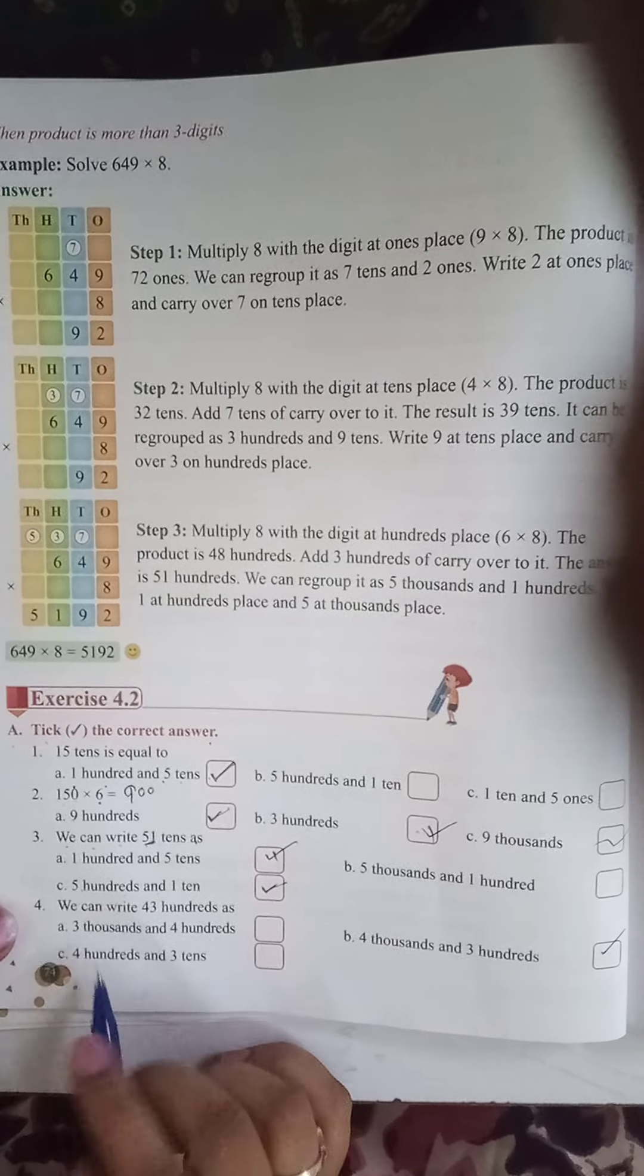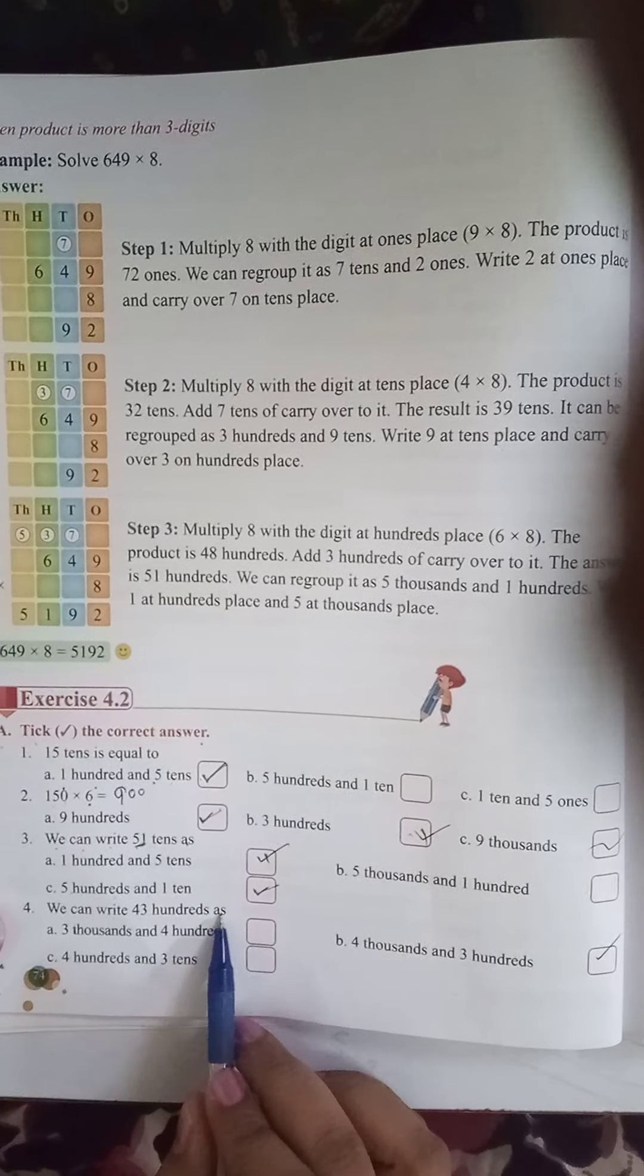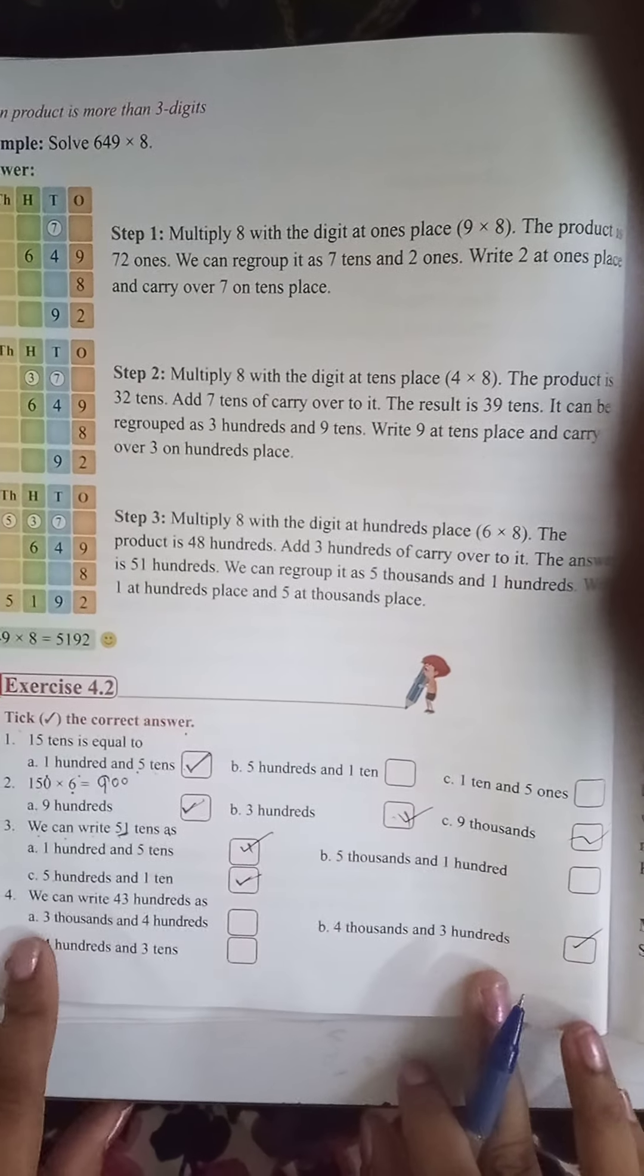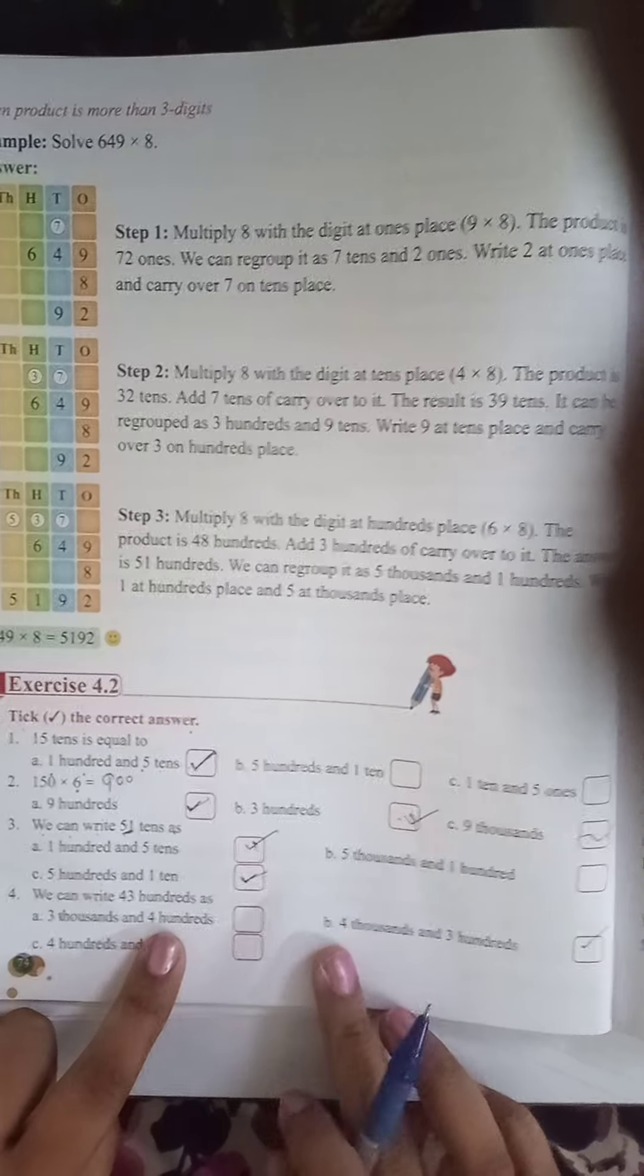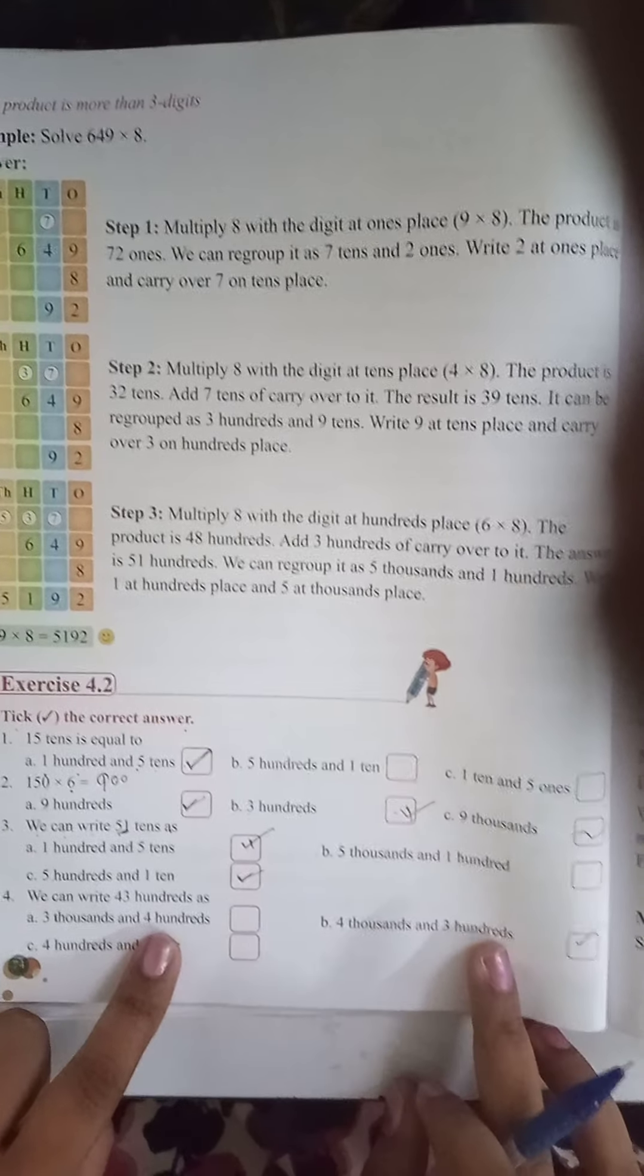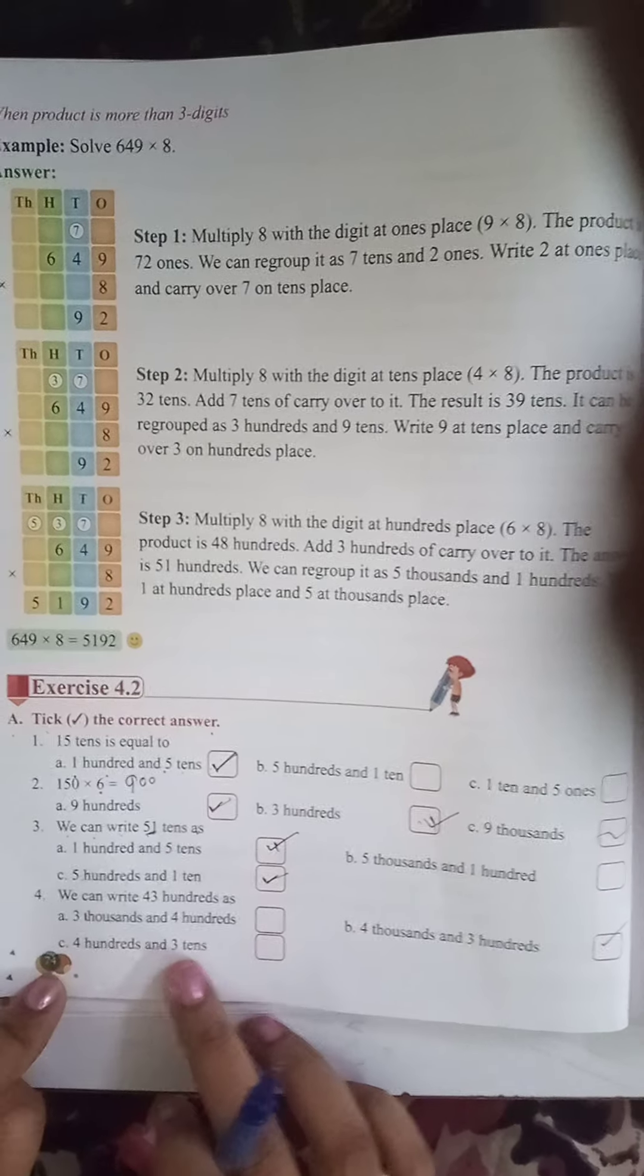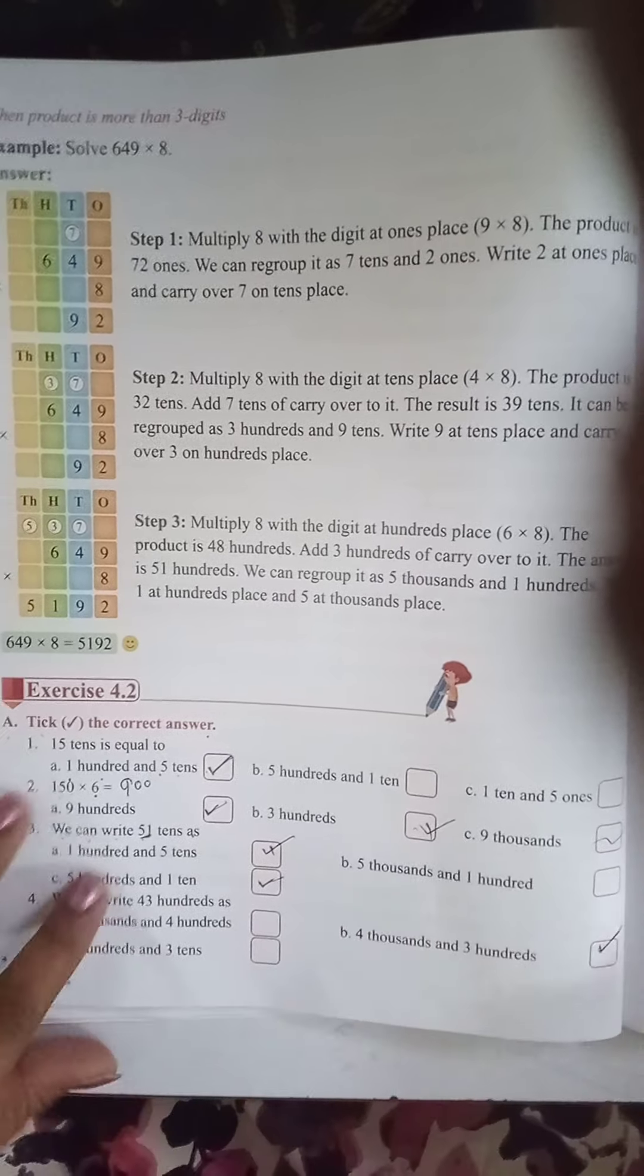Fourth one. We can write 4300 as... 4300 as answer one, A option is 3400, B option is 4300, and C option is 4400 and 3 tens. The B section will be correct answer.